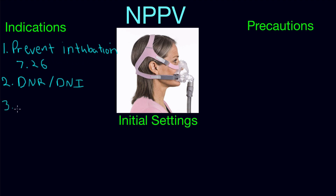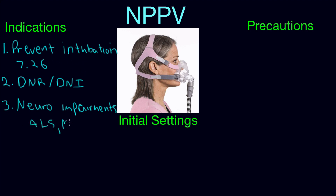A third indication would be patients with neuromuscular impairments. This category can include things like ALS, myasthenia gravis, Guillain-Barré syndrome, or even patients with stroke such as cerebrovascular accidents. Those are all good indications to use non-invasive positive pressure ventilation.